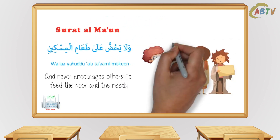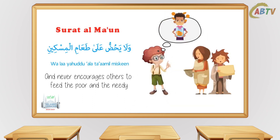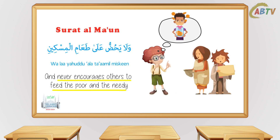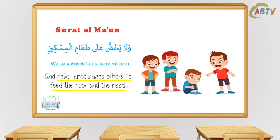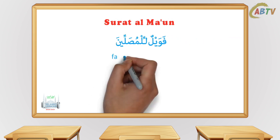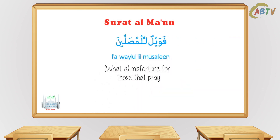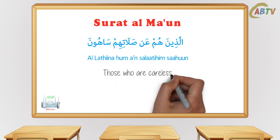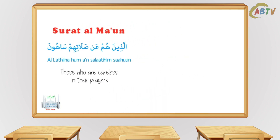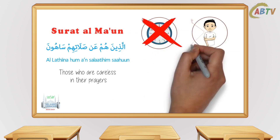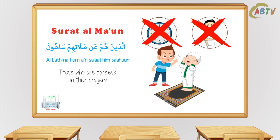If you see a poor person and you don't have any money or food to give them, you would at least tell others to help the poor person. But these people don't just push around the orphans — they never tell others to help the poor. These people who don't believe in the Day of Judgment don't care about good deeds or rewards and punishment. That's why Allah says in the next verse: 'Fa-waylun lil-musalleen' — what a misfortune for those that pray. And then the next verse says: 'Alladheena hum 'an salaatihim saahoon' — those who are careless in their prayers. These same people don't care about the time of prayer or its conditions. They keep forgetting about their prayer and even leave out the prayer completely.